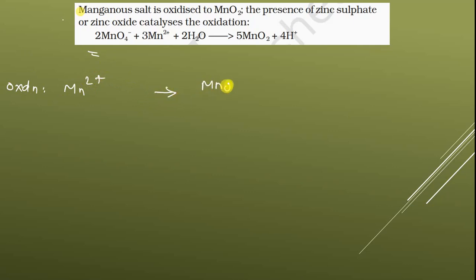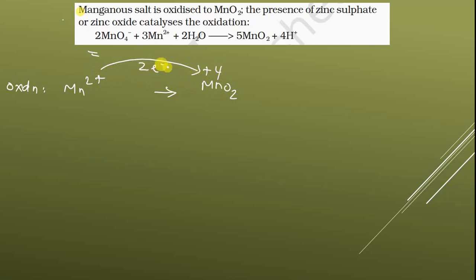Here MnO2 is in the plus four oxidation state. So manganese goes from plus two to plus four oxidation state, meaning two electrons have been lost.